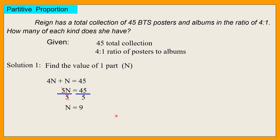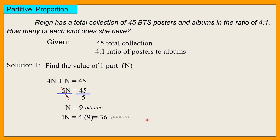So ibig sabihin, yung 1 part dito ay albums. She has 9 albums kasi 1 part lang yung sa album. 4 parts ang sa posters. So 4 times N or 4N — that is 4 times 9. So she has 36 posters.